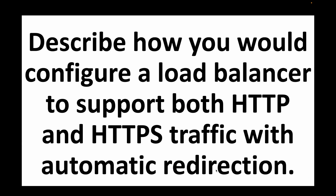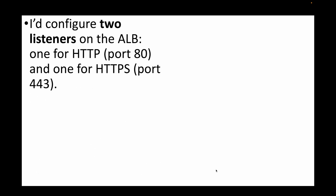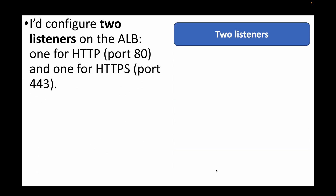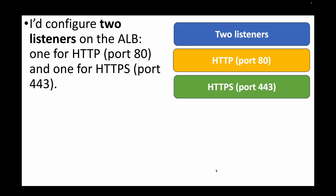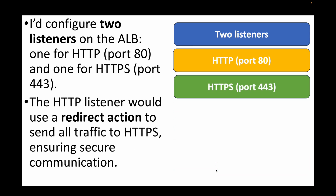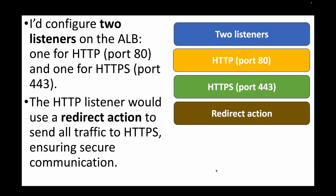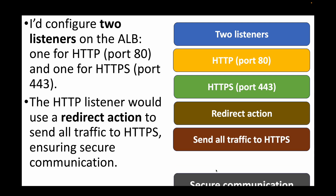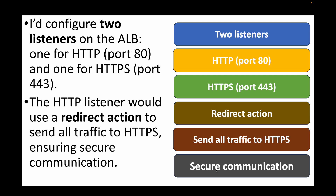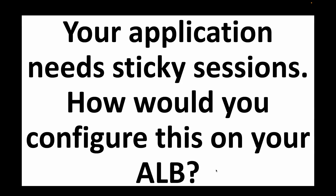The next question: how would you configure a load balancer to support both HTTP and HTTPS traffic with automatic redirection? For this we create two listeners in the load balancer — one pointing to HTTP port 80 and the other to HTTPS port 443. The HTTP listener uses a redirect action to send all traffic to HTTPS, ensuring secure communication. Even if the user hits the URL on HTTP, the redirect action redirects the request to HTTPS.